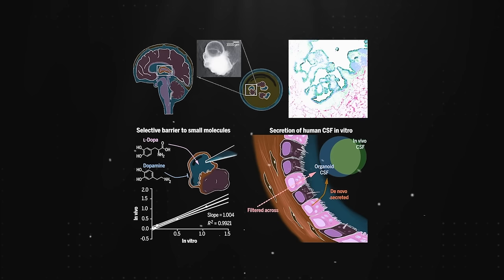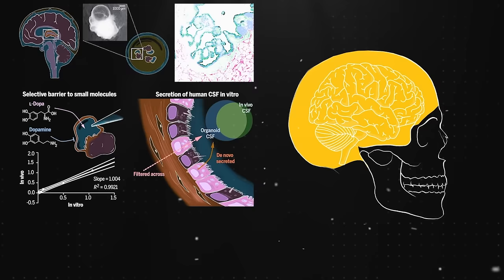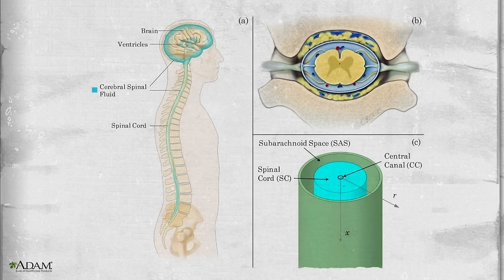This fluid extends beyond just the internal aspects. It also envelops the brain's external surface, providing an additional layer of protection. Cerebrospinal fluid continues its path down the spinal cord, flowing through the central canal and bathing the external surface of the spinal cord as well. This continuous flow ensures that the brain and spinal cord are consistently surrounded by this protective fluid.